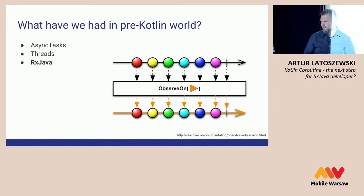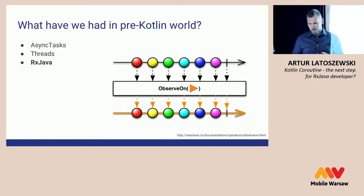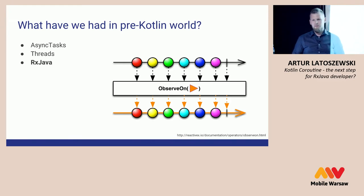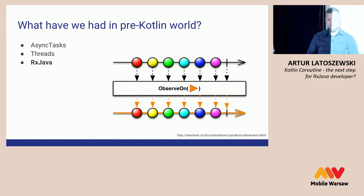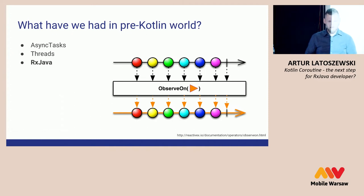What did we have in the pre-Kotlin world? We had AsyncTasks, which were poorly connected to the lifecycle of Android activities, and there were a lot of callbacks and the API was very unfriendly. We also had threads — a pure Java solution for hardcore people who love low-level things. And then we had RxJava, which was like a silver bullet for every developer.